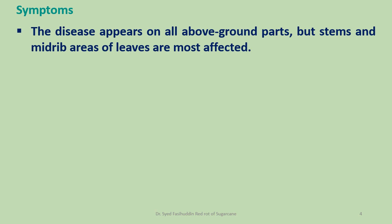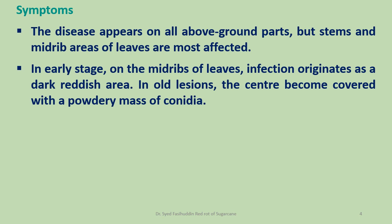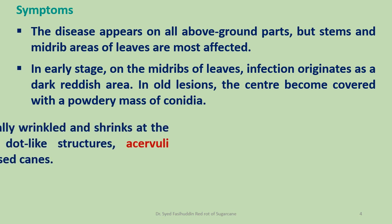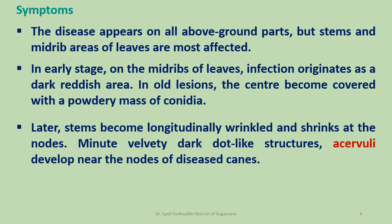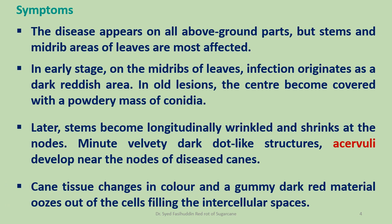The disease appears on all above-ground parts, but stem and mid-rib areas of leaves are most affected. In the early stage, on the mid-ribs of leaves, infection originates as a dark reddish area; the center becomes covered with a powdery mass of conidia. Later, the stem becomes longitudinally wrinkled and shrinks at the nodes. Minute velvety dark dot-like structures called acervuli develop near the nodes of diseased canes.